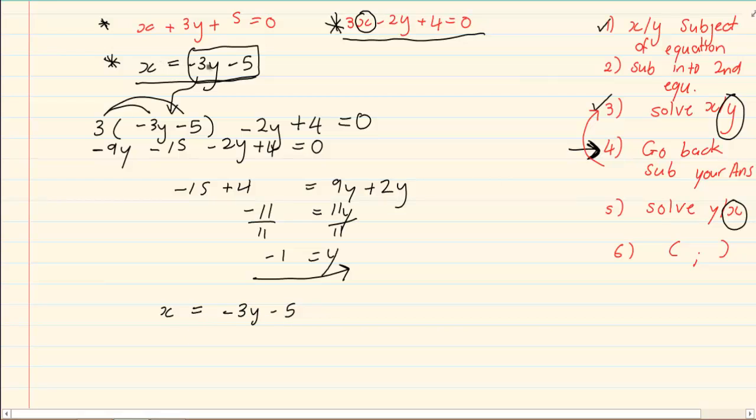So we have got x is equal to minus 3y minus 5. I am going to take my 1, my negative 1 and I am going to put it in place of y. So I have got x is equal to minus 3, open brackets minus 1, that is my substitution, minus 5.